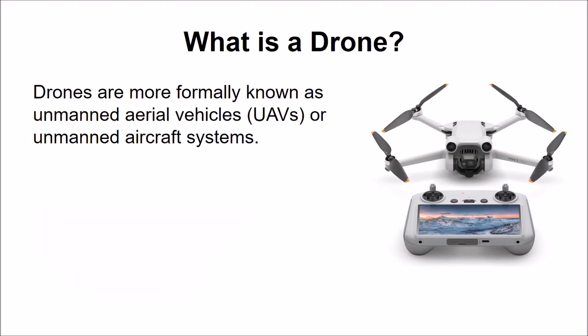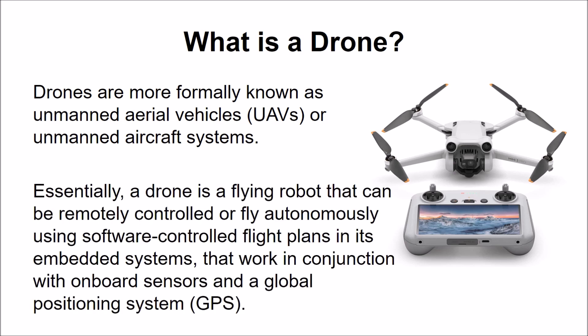Drones are formally known as unmanned aerial vehicles or unmanned aircraft systems. A drone is a flying robot that can be remotely controlled or fly autonomously using software-controlled flight plans in its embedded systems, working in conjunction with onboard sensors and global positioning systems. Simply put, drones are airborne systems or aircraft operated remotely by a human operator or autonomously by an onboard computer.